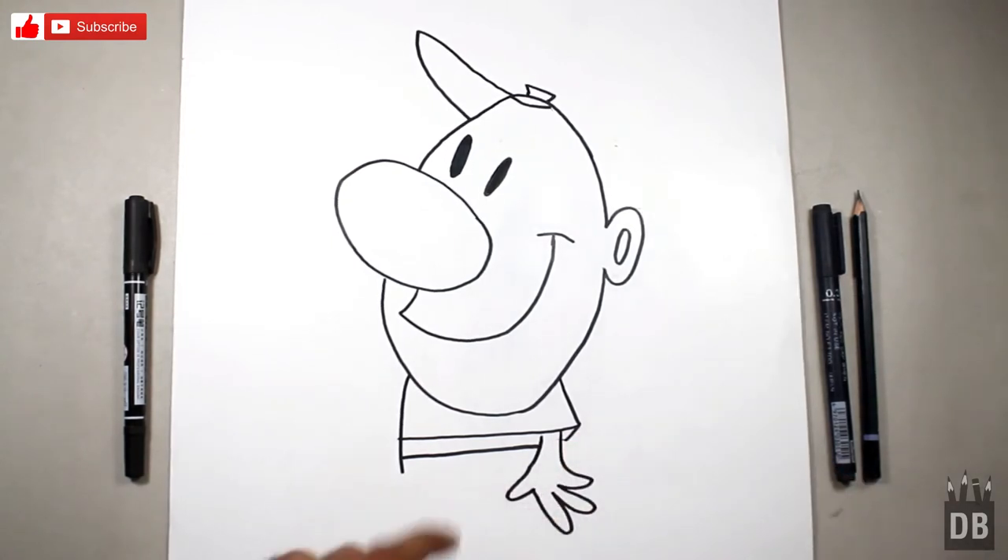Every cartoon has three fingers and one thumb. For his t-shirt line, we will make this. Now we are going towards the left and make a diagonal line. And from here we make an opposite side U.